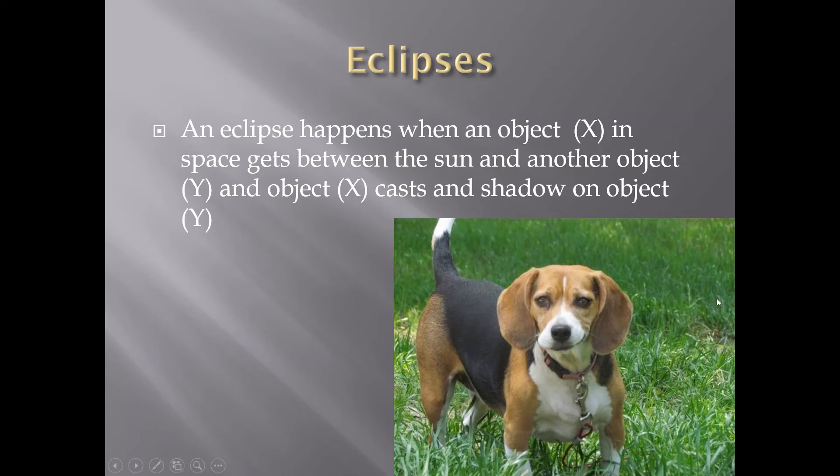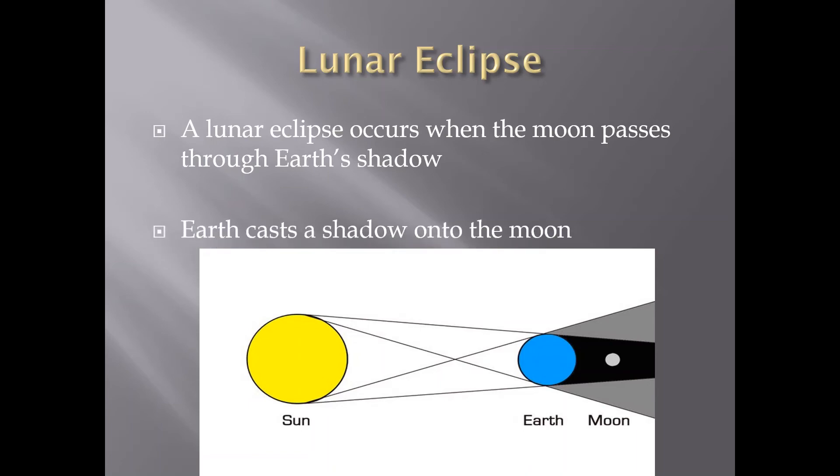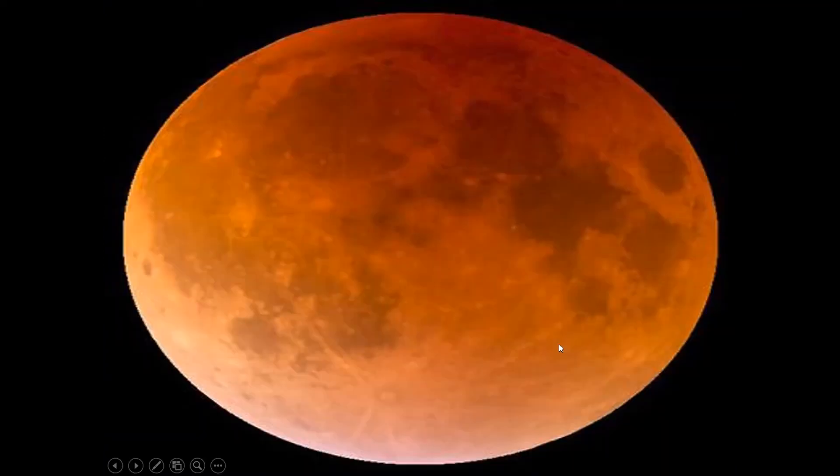So here's a lunar eclipse. This is when the Earth, object X, gets in front of object Y. Object X casts a shadow on Y. So in a lunar eclipse, the moon passes through Earth's shadow and Earth casts a shadow on the moon. That's because the sunlight is bending around the Earth and the Earth is bigger and blocking out the moon. And then you can get some really cool moon imagery like this. So when you see like a red moon or a blood moon or something, a lot of the time that's because there is a lunar eclipse occurring. We are kind of blocking that light.